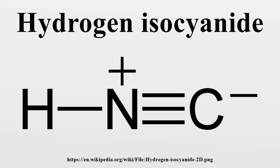Molecular Properties: Hydrogen isocyanide is a linear triatomic molecule with C∞v point group symmetry. It is isoelectronic and an isomer of hydrogen cyanide. Both HNC and HCN have large, similar dipole moments — μ(HNC) = 3.05 Debye and μ(HCN) = 2.98 Debye.